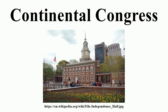The Continental Congress was a convention of delegates called together from the 13 colonies, which became the governing body of the United States during the American Revolution. The Congress met from 1774 to 1789 in three incarnations. The first call for a convention was made over issues of the blockade and the Intolerable Acts penalizing the province of Massachusetts, which in 1774 enabled Benjamin Franklin to convince the colonies to form a representative body.